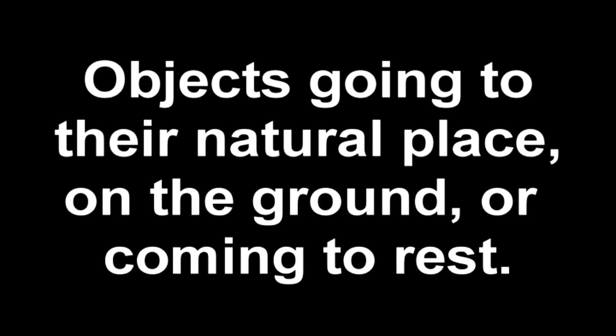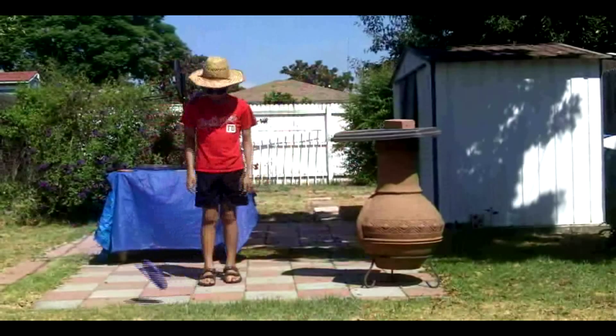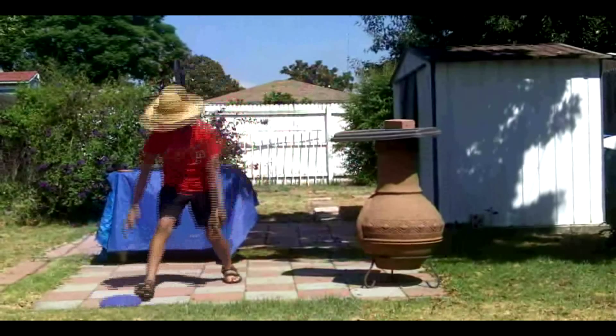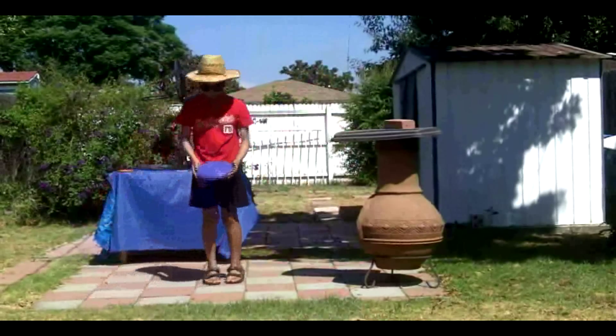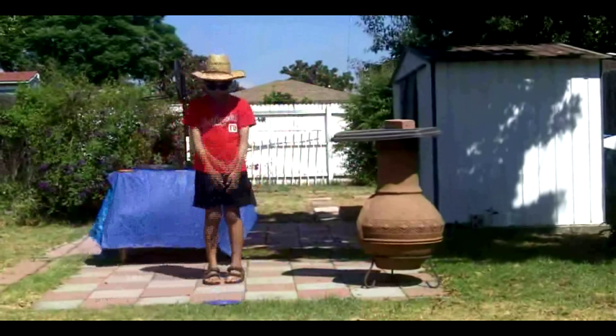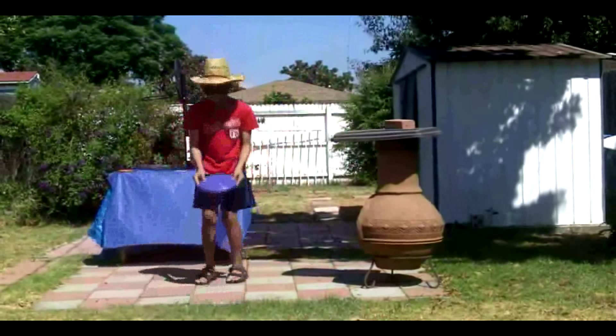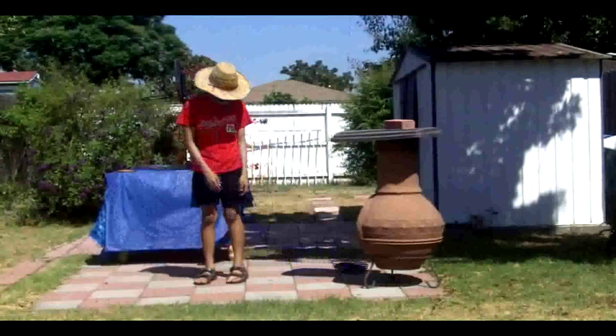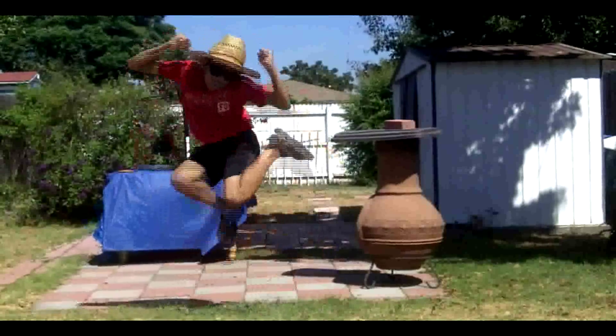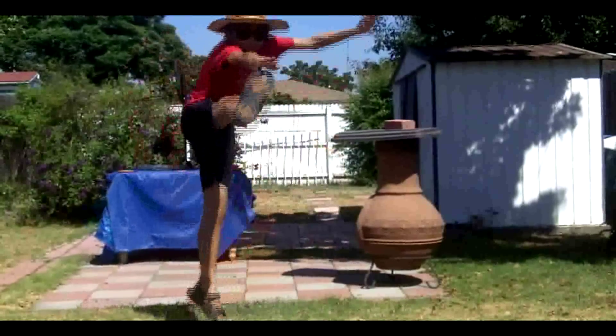There are also three types of motion. One of them is natural motion. Natural motion is objects going to their natural place on the ground and coming to rest. For example, if I throw this frisbee up in the air, it will just come back down because that's its natural place. Another example is if I jump, I come back down.